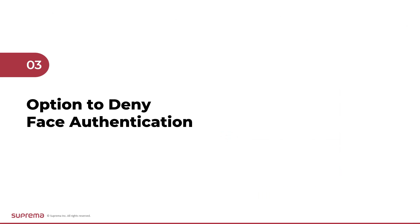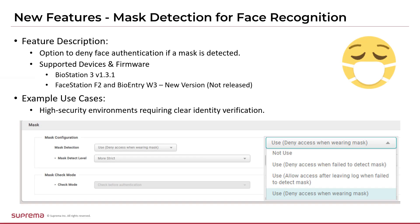Let me introduce some additional options related to mask detection. The Suprema device also has the ability to authenticate users wearing masks. However, in areas with slightly higher security, there is an additional option to deny authentication when attempting to authenticate while wearing a mask, so that authentication can be enforced without the mask. For this feature, there is a separate compatible firmware version, so caution is required when using it.